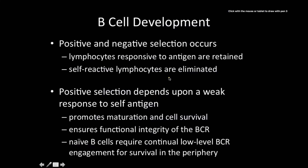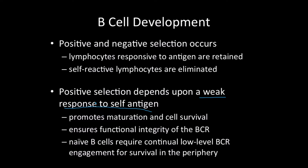Both B cells and T cell development share the concept of positive and negative selection. Positive selection, as its name sounds, is where we're only letting the ones who are reactive — the ones that are positive on their test — survive. This depends upon a weak response to a self-antigen, to ensure it's going to interact and bind things, promoting maturation and cell survival, and ensuring the functional integrity of the B cell receptor.